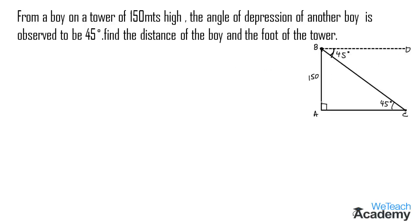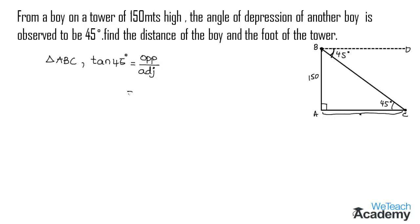Note that angle DBC is equal to angle BCA — that is, alternate angles. AC is the distance of the other boy from the tower. From triangle ABC, where the angle is 45 degrees, we get tan 45 is equal to opposite by adjacent. The side opposite to the angle is AB, so we get AB by the adjacent side AC.